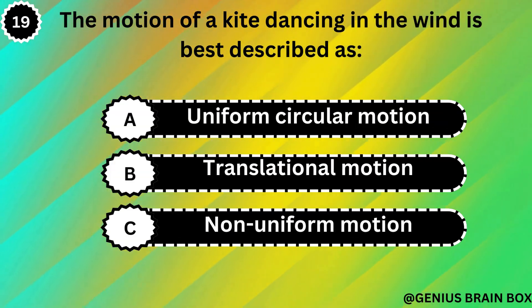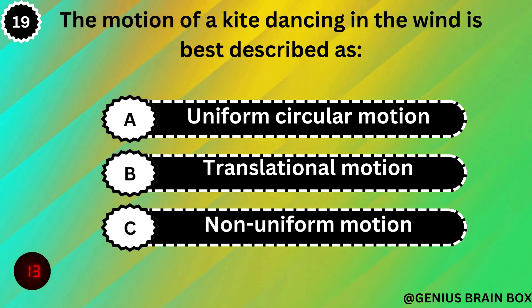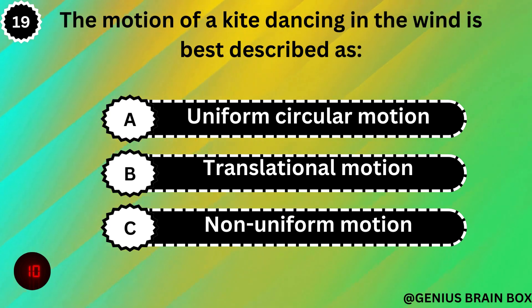The motion of a kite dancing in the wind is best described as: uniform circular motion, translational motion, or non-uniform motion.